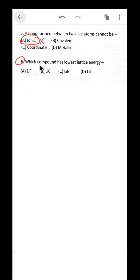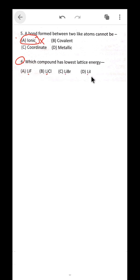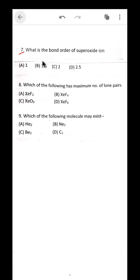Question 6: which compound has the lowest lattice energy? The concept is: smaller the cation size and larger the anion size, the higher the lattice energy. Here the cation size is the same in all options, so we check where the anion size is largest. That is in option D, so the answer is option D.